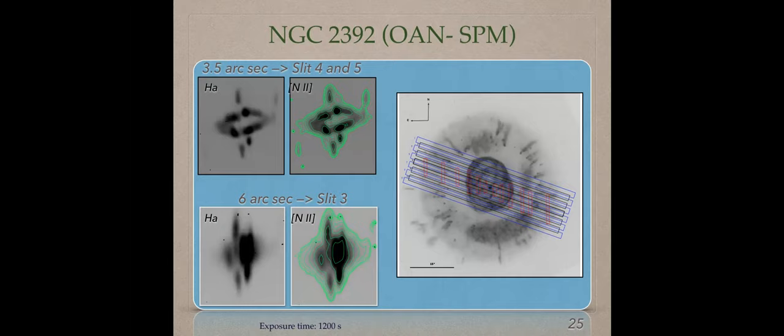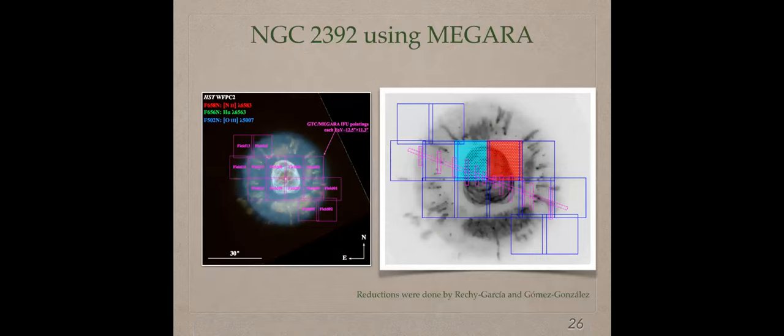We observed, for example, that in the slits 4 and 5, the position velocity diagram that they have green contours, we observed the jet, but very, very weak. But if we observe the slit 3, the slit 3 that is in the north of the nebula, that it is from 6 arc second from the star, we can't observe this jet. The idea is that this jet has a broad, as García Diaz told us in the past article. The idea is to study this jet using Megara.